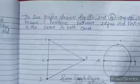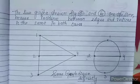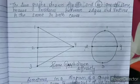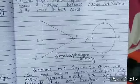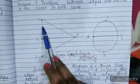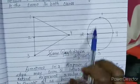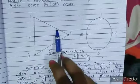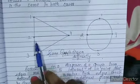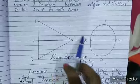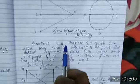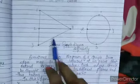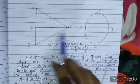The two graphs drawn in figure A and figure B are the same because the incidence between edges and vertices is the same in both cases — these are examples of a simple graph. The total number of vertices is four in each, and the edges are the same. These are examples of simple graphs drawn differently.